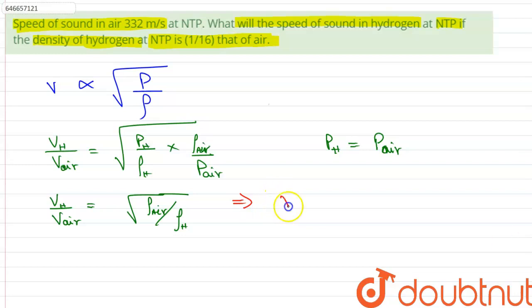that vh equals 332, which is the speed of sound in air, multiplied by 4. Thus this implies that the speed of sound in hydrogen is equal to 1328 meters per second, and this is the answer. Thank you.